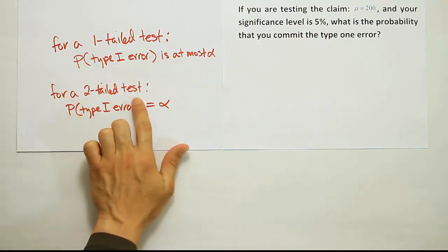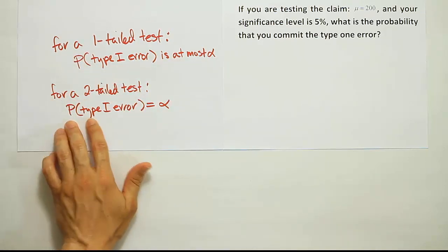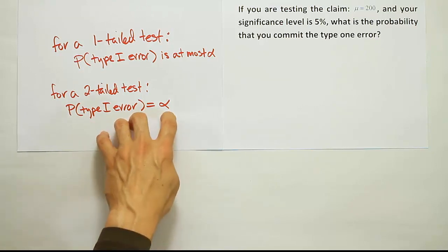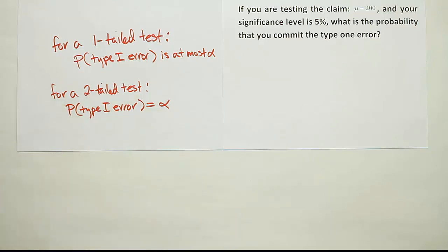For a two-tailed test, the probability of a Type 1 error is equal to alpha. And all we have to do in this scenario is figure out whether we're dealing with a two-tailed test or a one-tailed test.